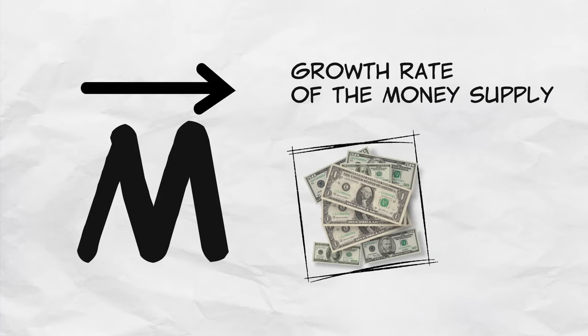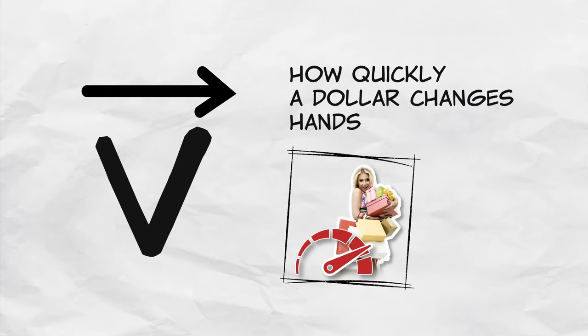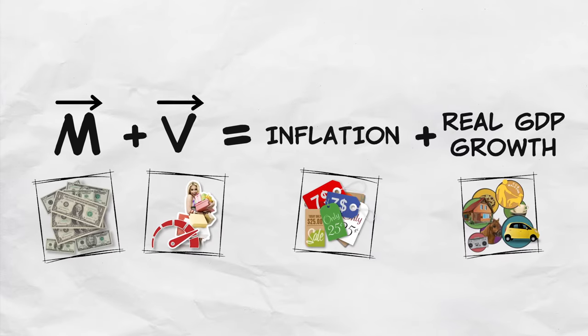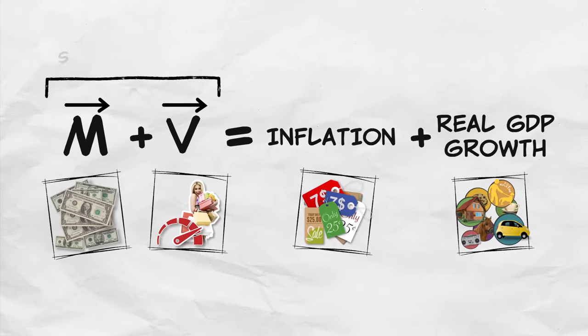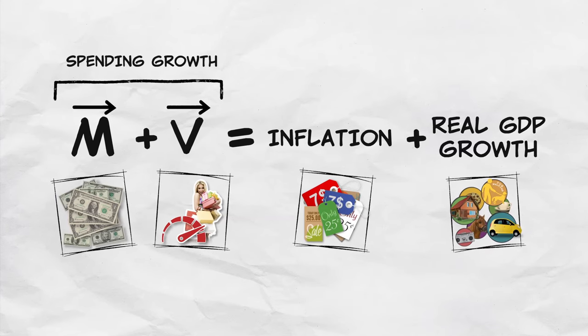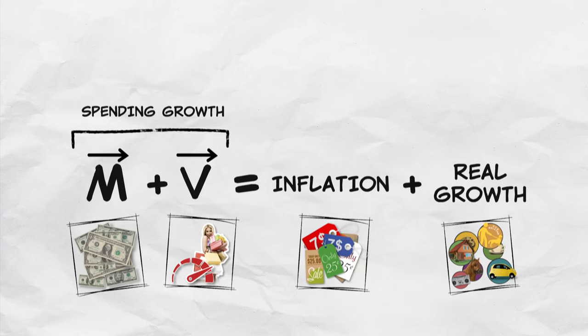Let's recall the dynamic version of the quantity theory of money: growth in the money supply plus growth in velocity equals inflation plus real growth. Or more simply, spending growth equals inflation plus real growth. Economists believe that faster spending doesn't flow immediately into an increase in inflation. And if inflation is slow to change, then according to our equation, real growth must change.